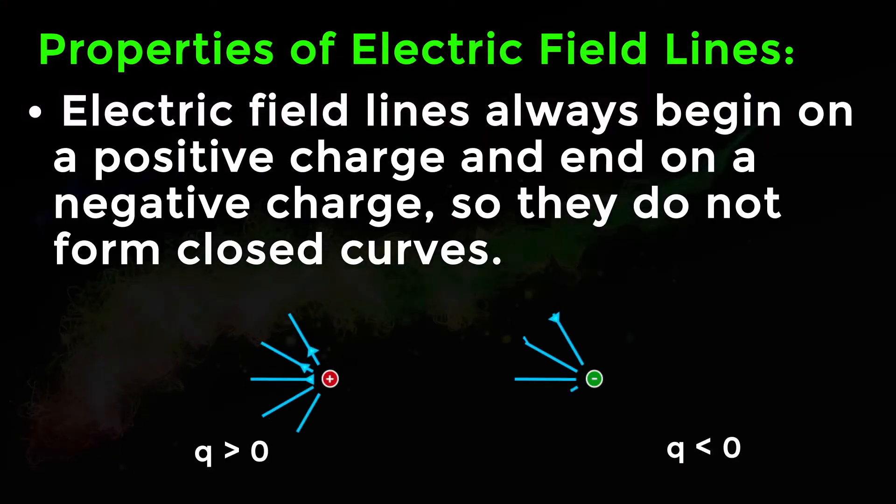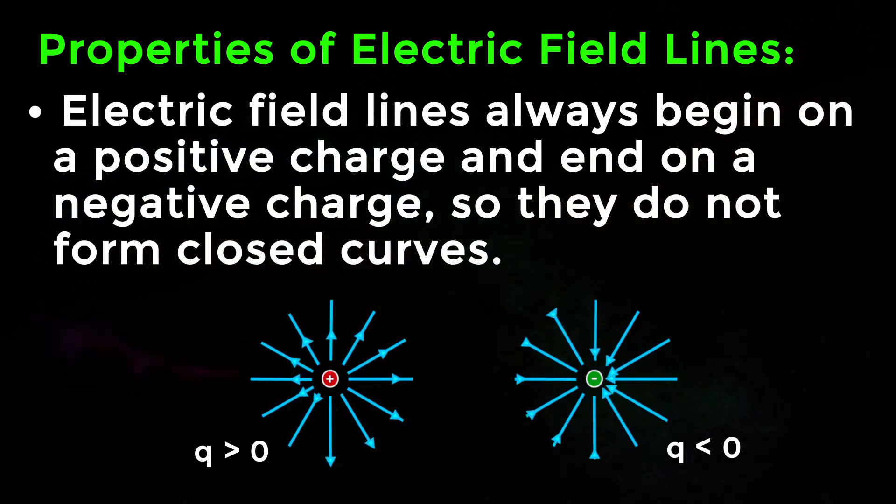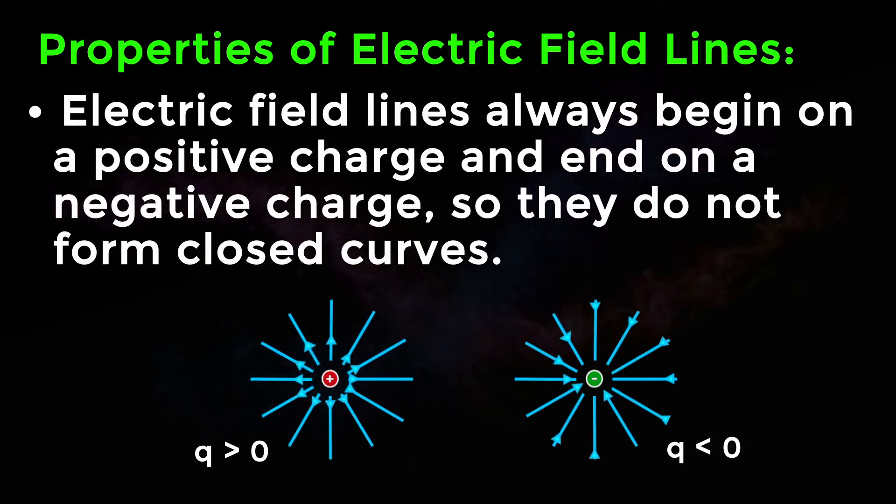Electric field lines always begin on a positive charge and end on a negative charge, so they do not form closed curves.